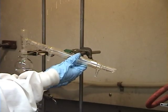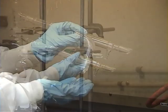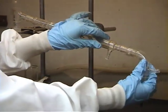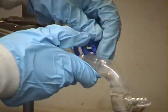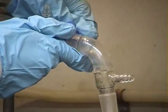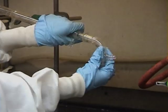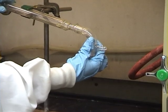On a separate ring stand, clamp the condenser sideways. A vacuum adapter is attached to the lower end of the condenser with a Keck clip. Ensure the openings of the condenser are pointing up.